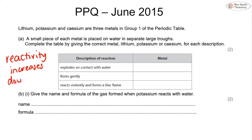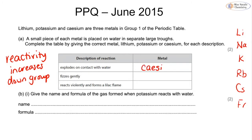Remember, reactivity increases down the group, so the most reactive element is at the bottom of the periodic table. The order is lithium, sodium, potassium, rubidium, cesium, francium — you can always check your periodic table in the exam. The one that explodes on contact with water is the most reactive, so that is cesium. We know potassium produces a lilac flame, so that matches. The one that fizzes gently is the least reactive, nearest the top, which is lithium.